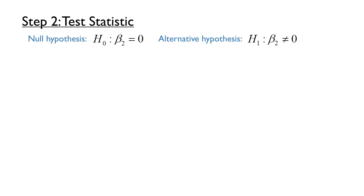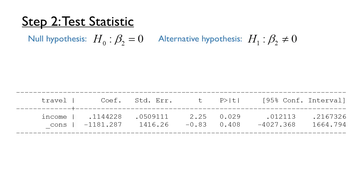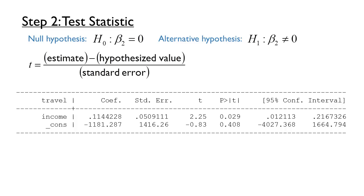The second step is to compute the test statistic. Computing a test statistic requires both the hypothesis and the estimates from the regression. When performing a hypothesis test on a single regression coefficient, a t-statistic does this. A t-statistic is defined as the estimated value minus the hypothesized value, divided by the standard error estimate. This is a generic formula for a t-statistic, but each of these three terms refers in this case to the beta 2 parameter that we are testing.